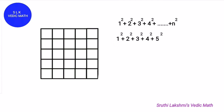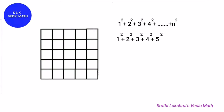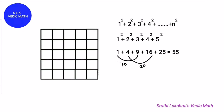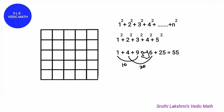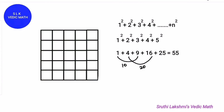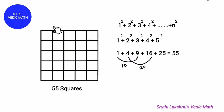We do 1² up to 5²: 1² + 2² + 3² + 4² + 5². That is: 1 squared = 1, 2 squared = 4, 3 squared = 9, 4 squared = 16, 5 squared = 25. Then 1 + 9 = 10, and 4 + 16 = 20, and 10 + 20 = 30, and 30 + 25 = 55. So there are 55 squares in this 5 by 5 grid.